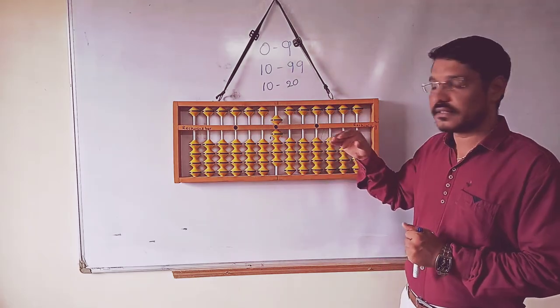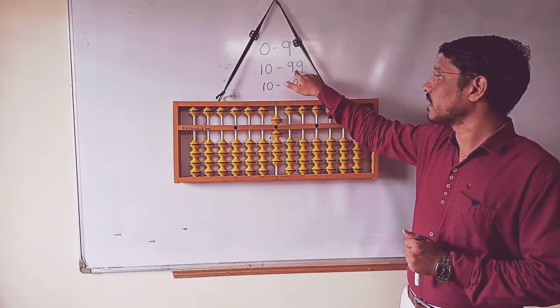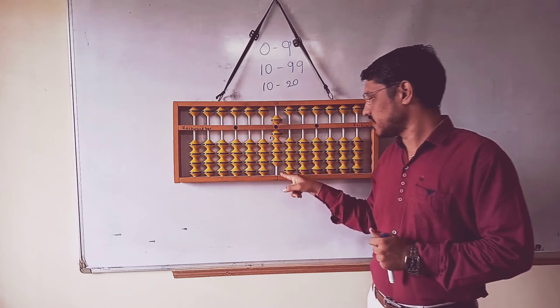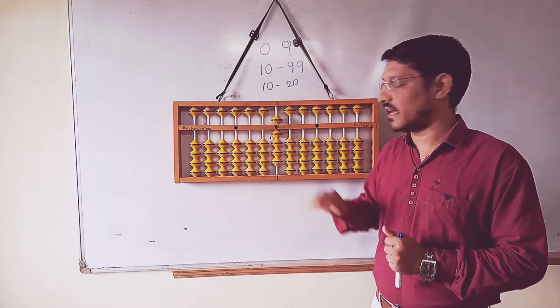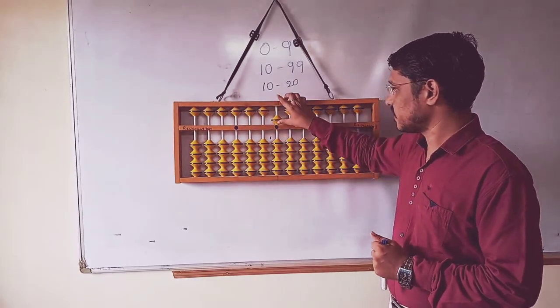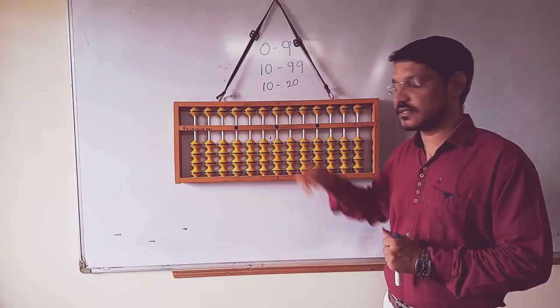Now we are going to the second one, that is 10 to 99. First digit I have only limited 1 to 9, otherwise 0 to 9. This is the 0, this is my zero point.